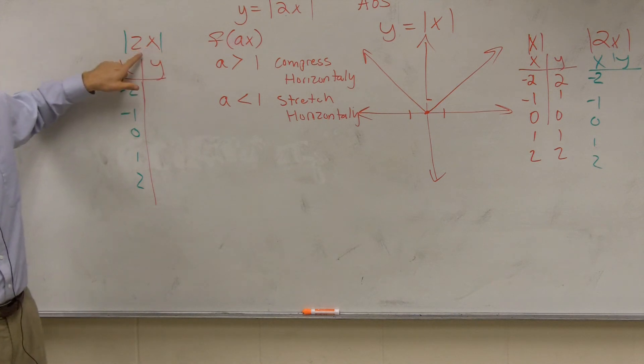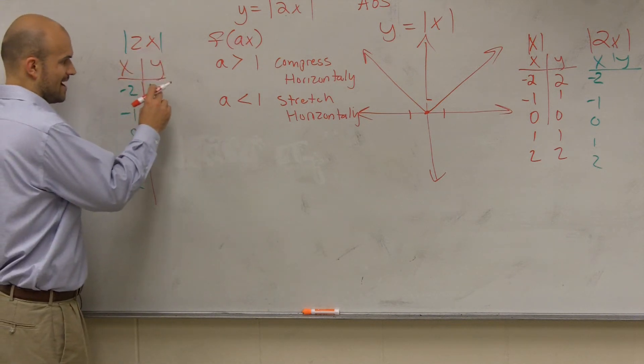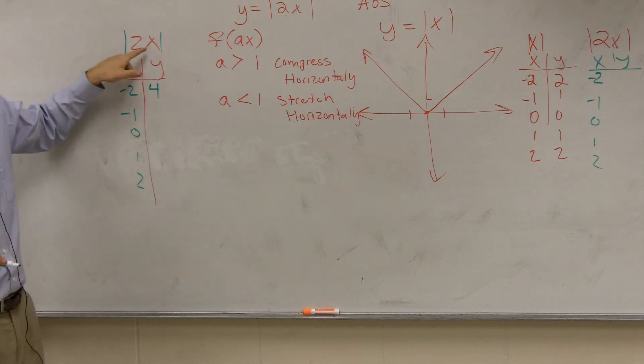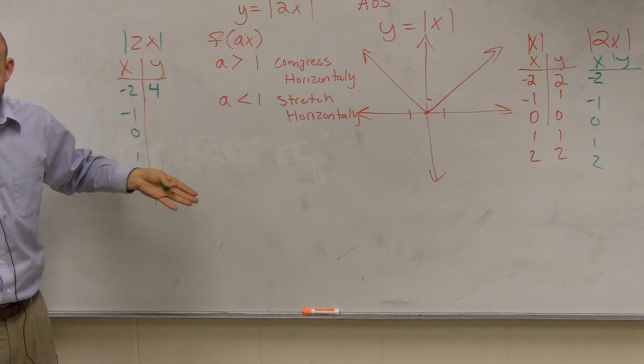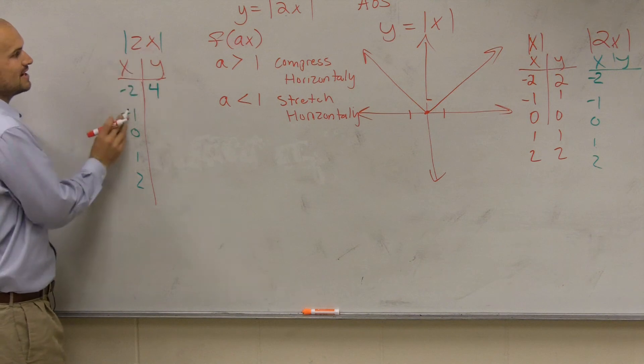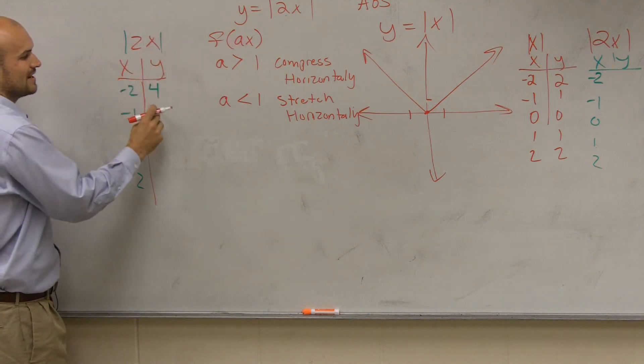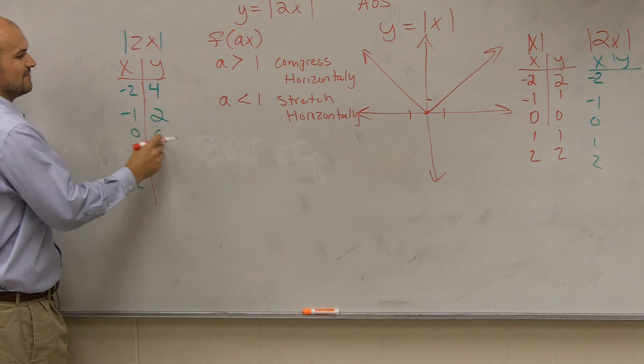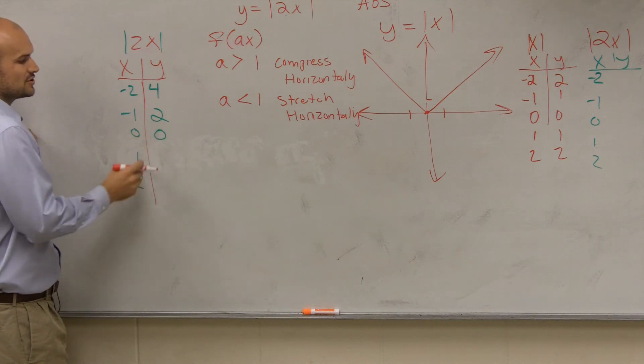So at negative 2, what's negative 2 times 2? Negative 4. Absolute value of negative 4 is positive 4, right? Negative 2 times negative 2 is negative 4. The absolute value of negative 4 is positive 4. 2 times negative 1 is negative 2. Absolute value of negative 2 is 2. 0 times 2 is 0. Absolute value is 0. 1 times 2 is 2. Absolute value is 2. And that one's 4.